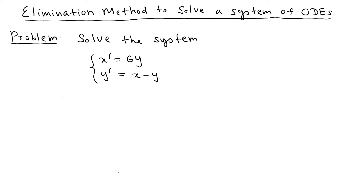We can do this problem in two different ways. I'm going to call these two equations equation one and equation two so it's easy to refer to them. The first way is you can take the derivative of the first equation, or the other way is you can take the derivative of the second equation. Let's try taking the derivative of the first equation.